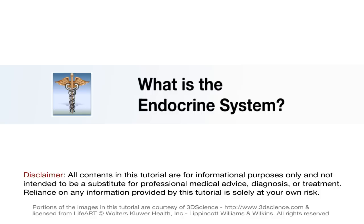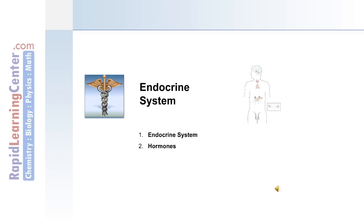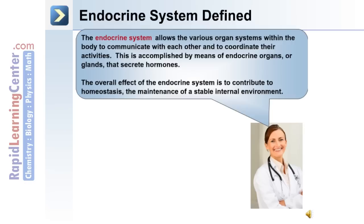Let's begin by discussing the anatomy of the endocrine system as well as the different types of hormones. The endocrine system allows the various organ systems within the body to communicate with each other and to coordinate their activities. This is accomplished by the means of endocrine organs that secrete key hormones. The overall effect of the endocrine system is to contribute to homeostasis — the maintenance of a stable internal environment.